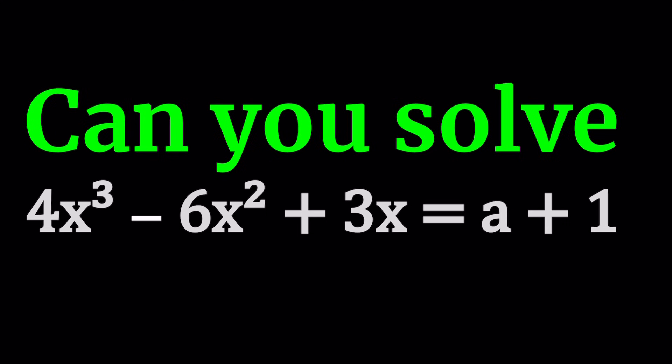So we have 4x³ - 6x² + 3x equals a + 1. A is a given number, which means we can change a and we'll get a different set of solutions. But suppose a is given as, let's say, 1/2, 2/3, square root of 5. Can you find solutions for every scenario? Also, it tells us that the solution is going to be based upon a. And in these cases where a is kind of like a parameter, which is a given number, we may not have solutions all the time.